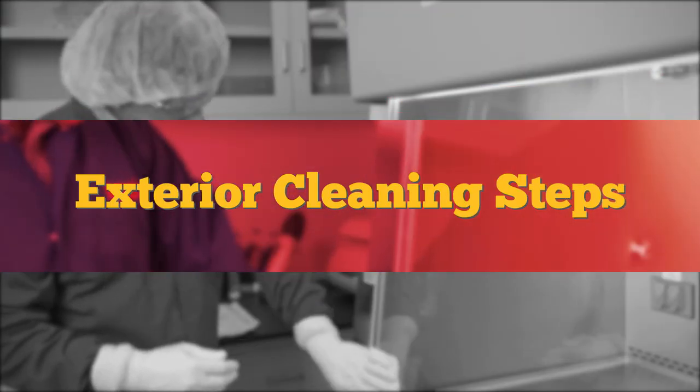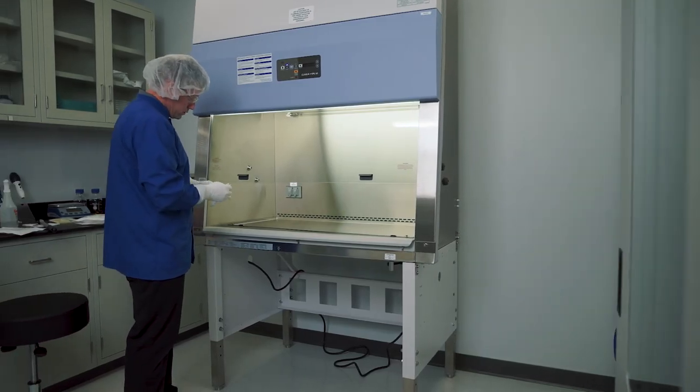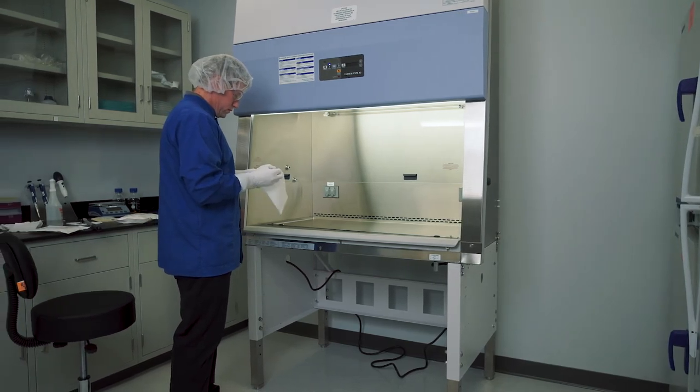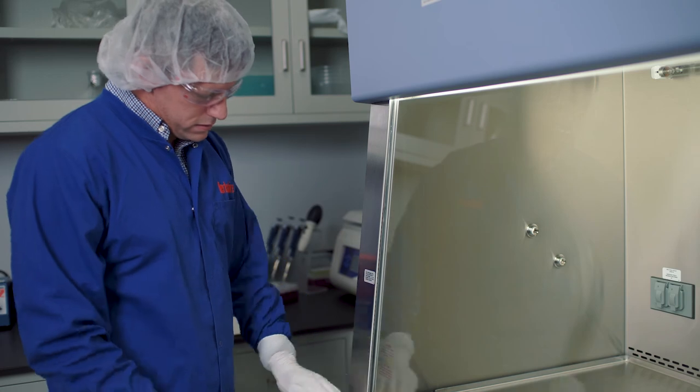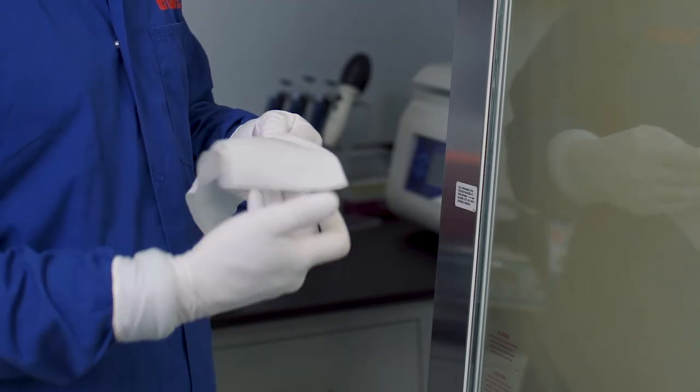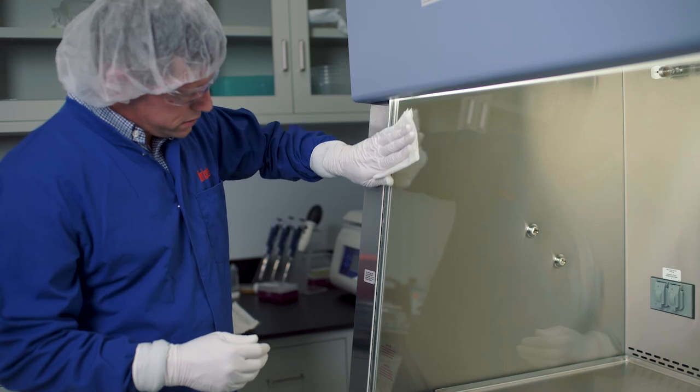Exterior cleaning steps. Use pre-saturated, non-sterile isopropyl alcohol, IPA, and deionized water wipes, starting top to bottom, finishing with the front shield. Remember to quarter-fold the wipe, exposing a clean surface each time.